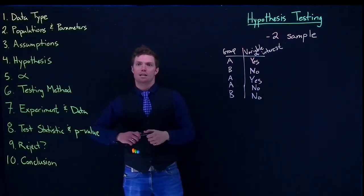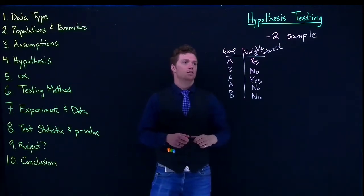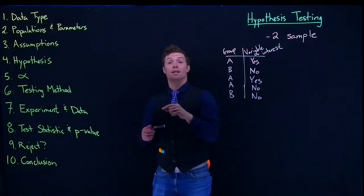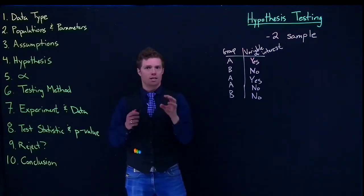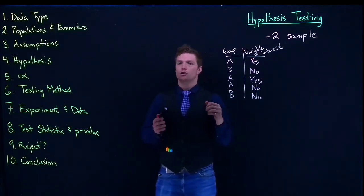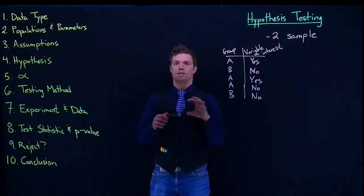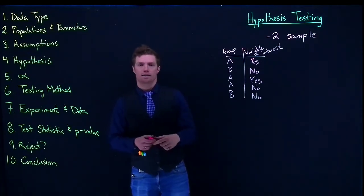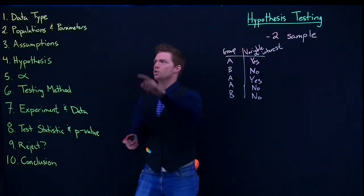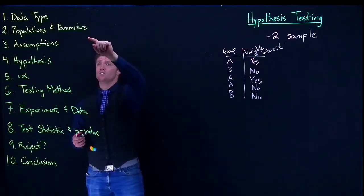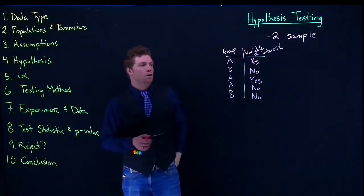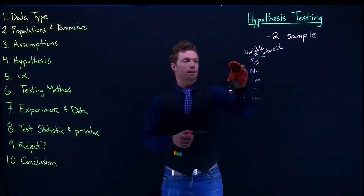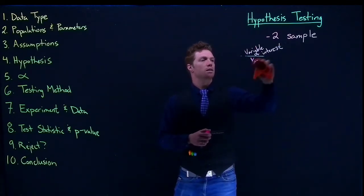The parameter you need comes from the data type: if we're dealing with numerical data we know we're dealing with means; if we're dealing with categorical data we know we're dealing with proportions. But the parameter of interest needs to be specific — like 'the true mean speed down the hill' or 'the true proportion of students who participate in athletics.' And now it's not just for one group — we need parameters for both.